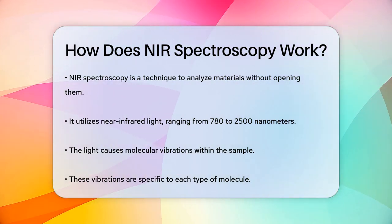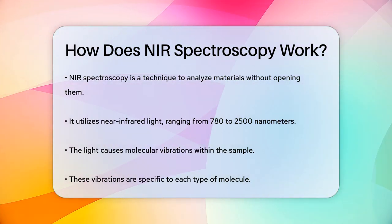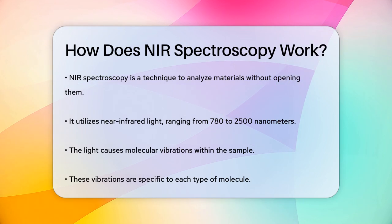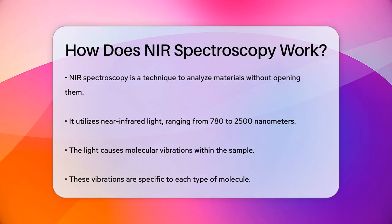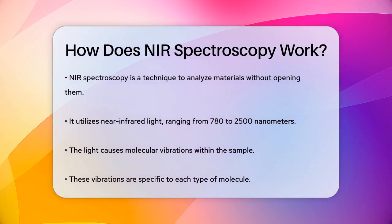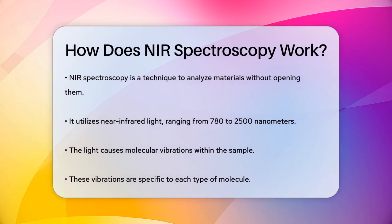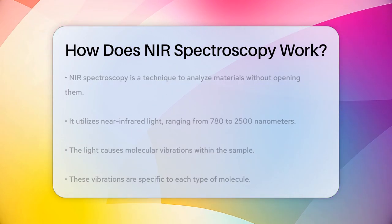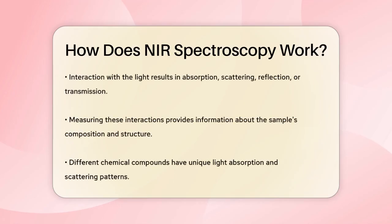When this near-infrared light interacts with a sample, it causes the molecules in the sample to vibrate. These vibrations are tiny movements within the molecular bonds. The light induces overtones and combinations of these molecular vibrations, which are unique to each type of molecule.